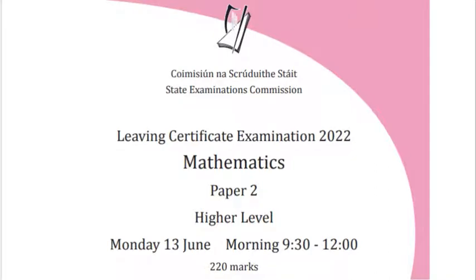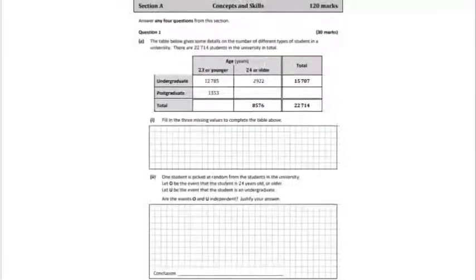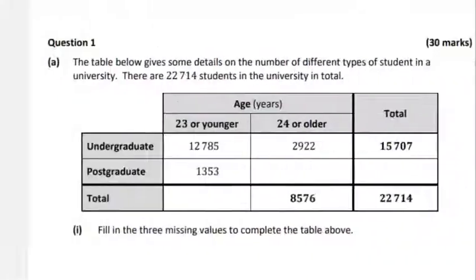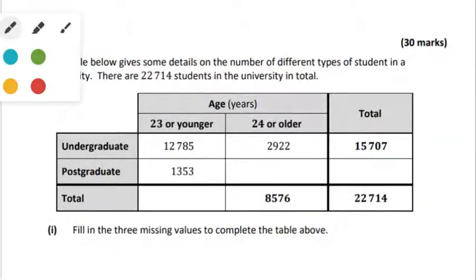Hello and welcome to Maths Plus. Today we're covering the 2022 Leaving Cert Higher Level Paper 2, Question 1. Let's have a look at the question. First of all we need to fill in the table, very straightforward. The second part we need to use one of the probability rules for independent sets. So let's go about filling in the table.